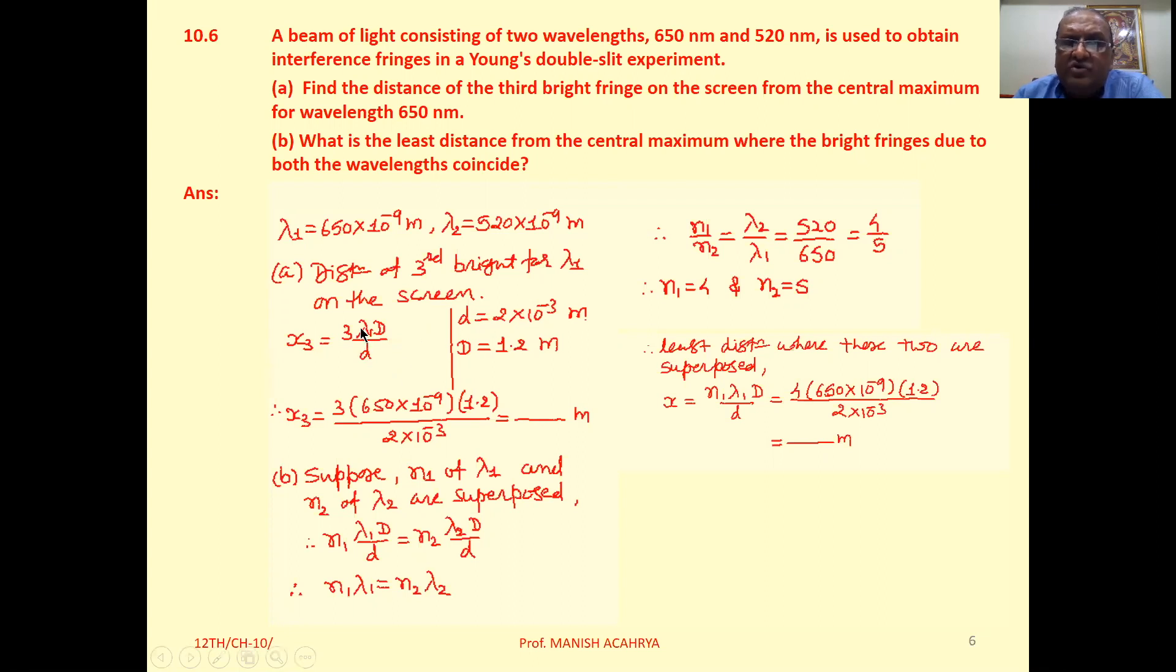Now substitute the values of lambda 1, capital D, small d that is 2 into 10 raise to minus 3 meter, capital D that is 1.2 meter. Actually in the question, the value of small d and capital D is missing. That is a printing mistake, but it is there.